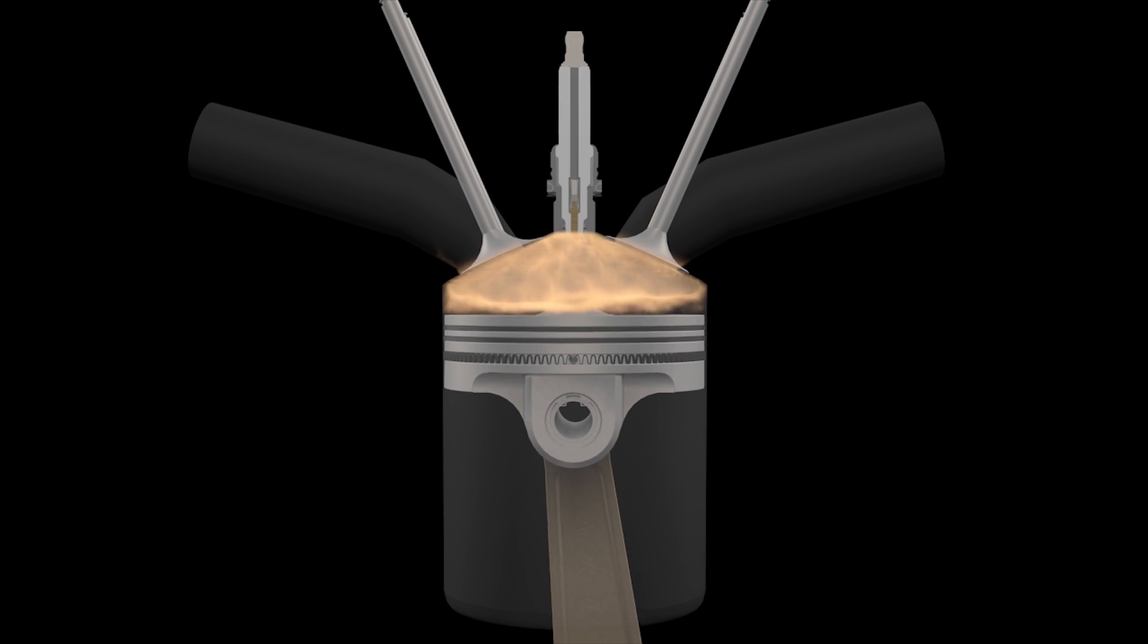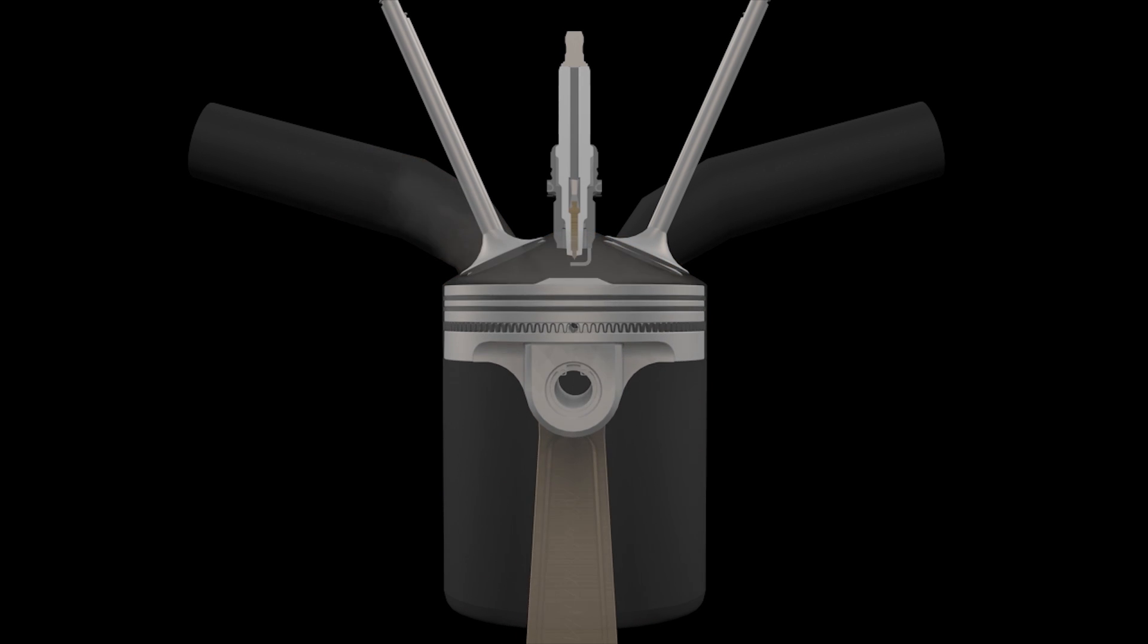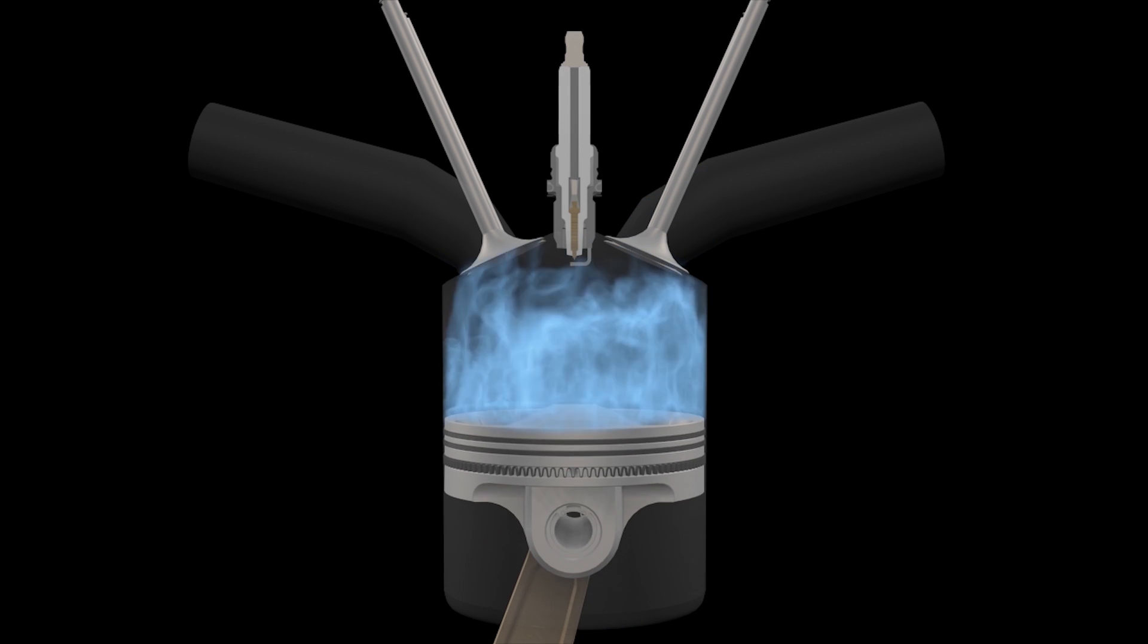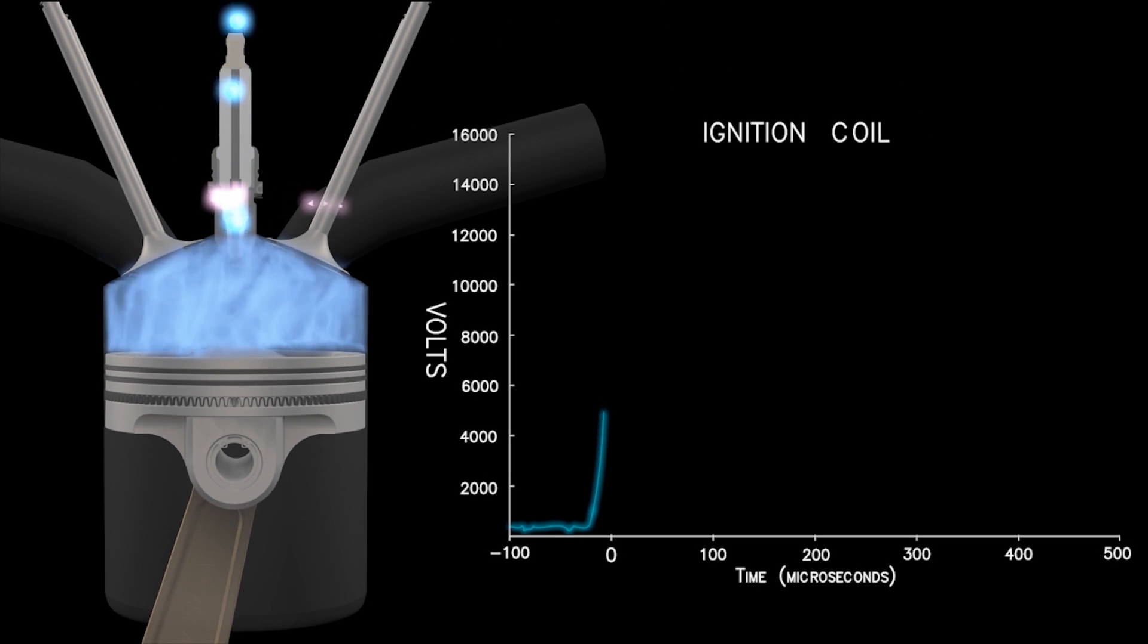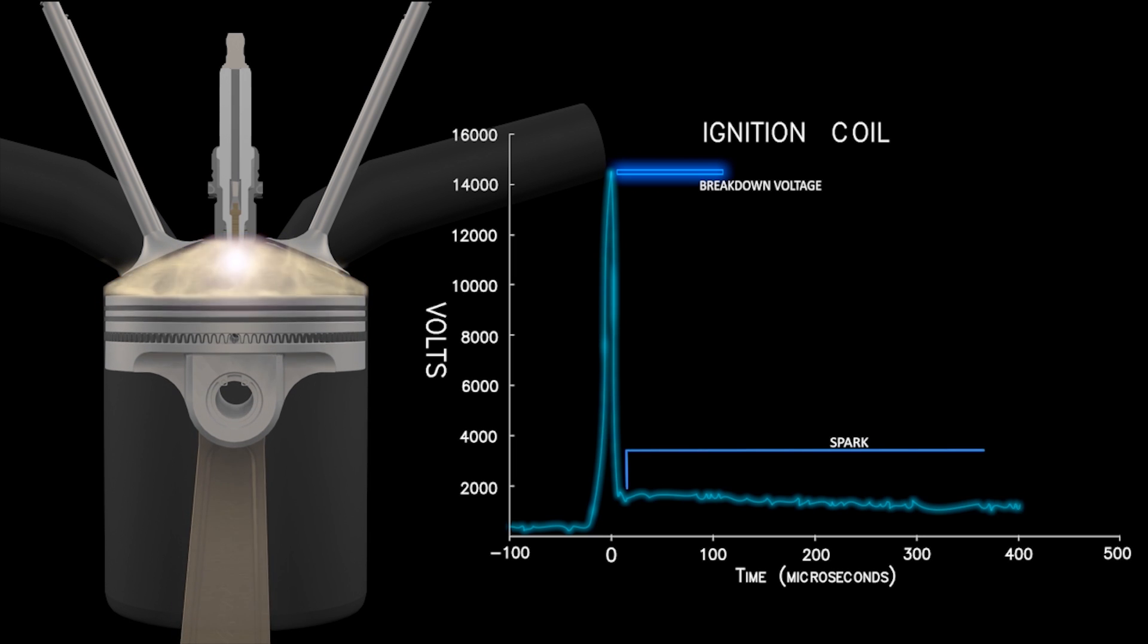The spark plug only has one thousandth of a second to create a spark and ignite and burn the fuel. When the ignition coil is triggered, it begins to deliver energy to the spark plug. Once enough voltage is delivered, the spark plug is able to form a spark.